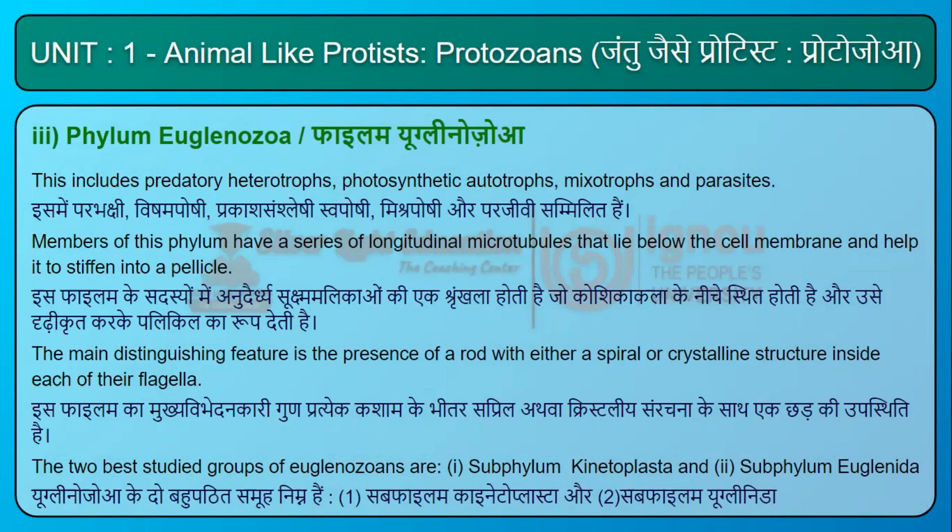The two best studied groups of Euglenozoans are: (1) Subphylum Kinetoplasta and (2) Subphylum Euglenida.